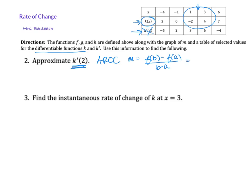So all you've got to do now is plug the numbers in. This is going to be f of three minus f of one over three minus one, and that gives you four minus negative two over two, which is six over two, which is three. So k prime of two, or the instantaneous rate of the function k at two is approximately three.